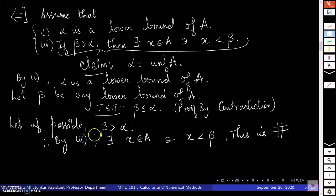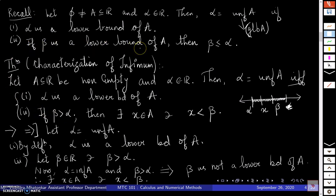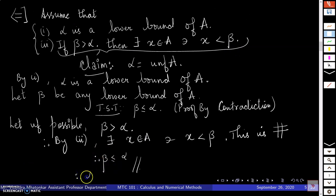We get a contradiction because beta was assumed to be a lower bound of A, but we found x in A with x less than beta. This contradiction arose because we assumed beta greater than alpha, so beta cannot be greater than alpha. Hence beta ≤ alpha. Since any lower bound beta of A satisfies beta ≤ alpha, the second condition of the definition holds, and therefore alpha is the infimum of A. This completes the proof of the characterization.